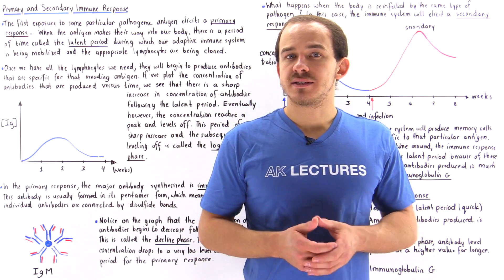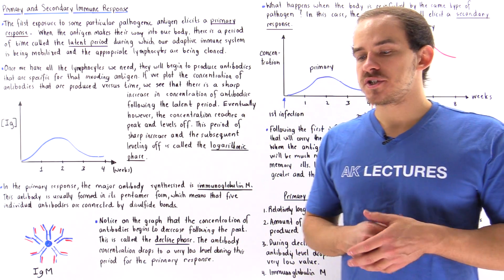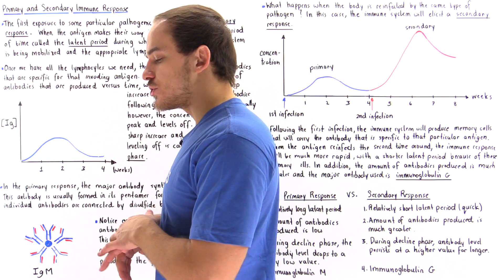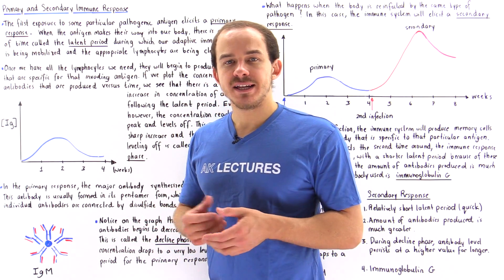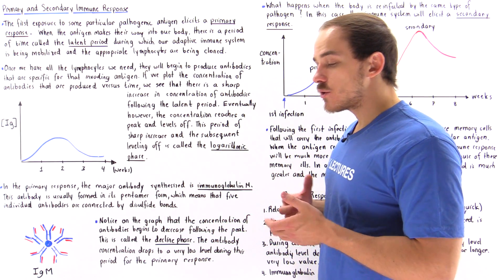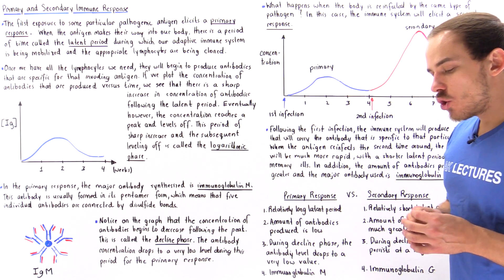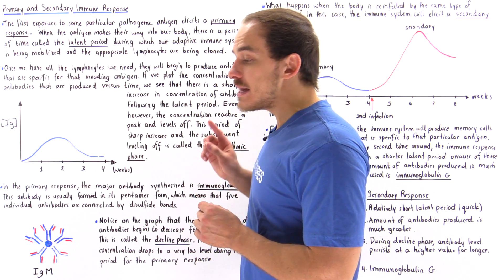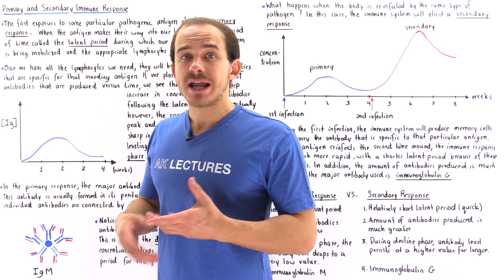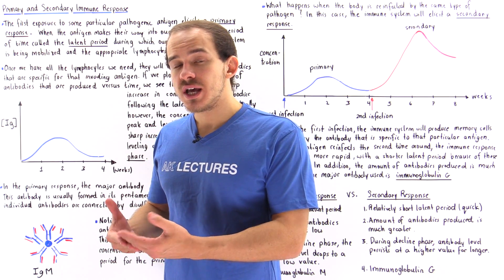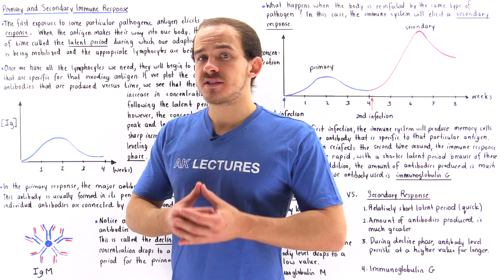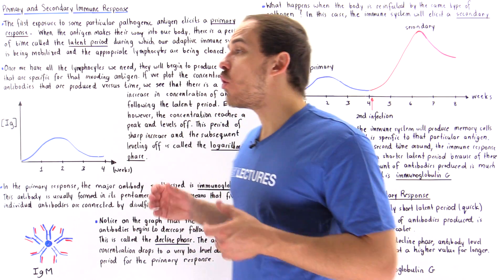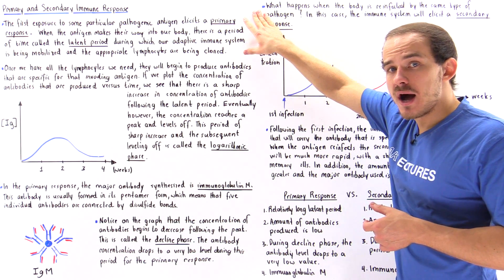Let's compare and contrast the primary and the secondary response of our immune system to some particular pathogen. The first time our body is ever invaded by a particular pathogen that carries its own antigen, our immune system responds in a certain way. This response we call the primary response.